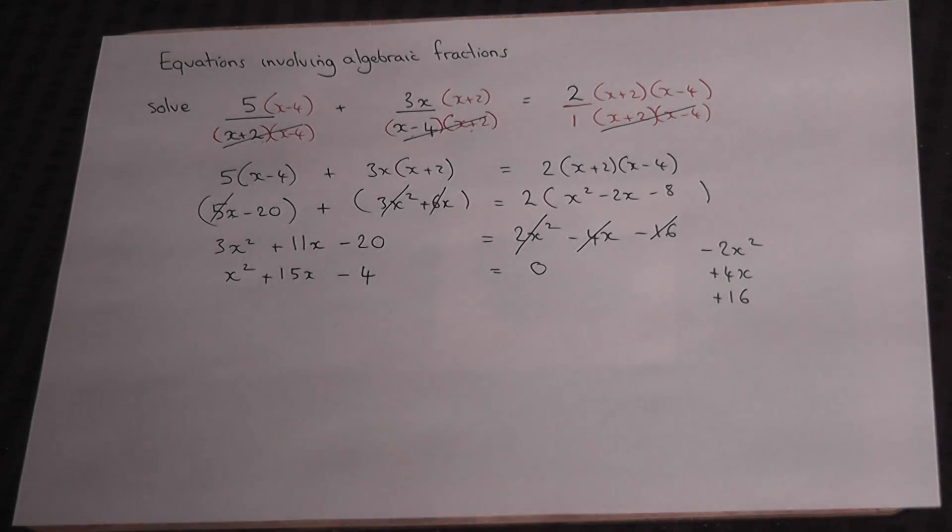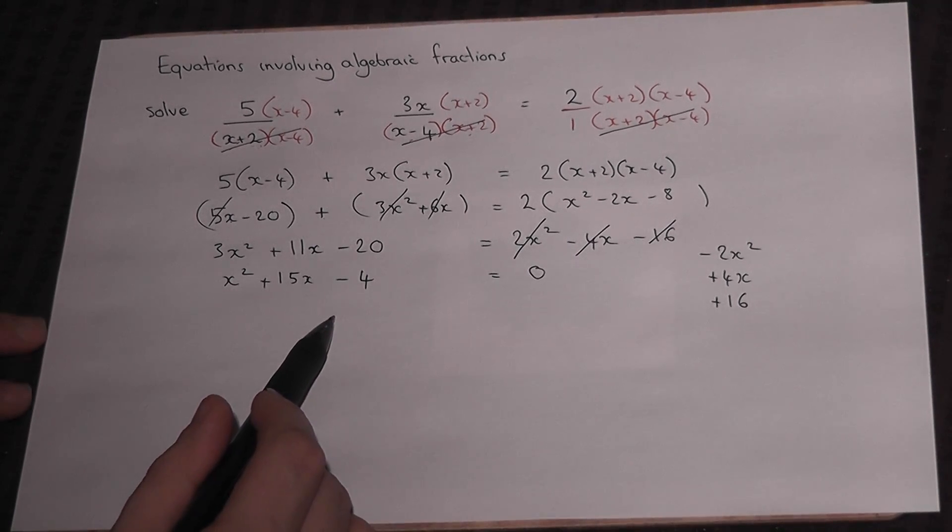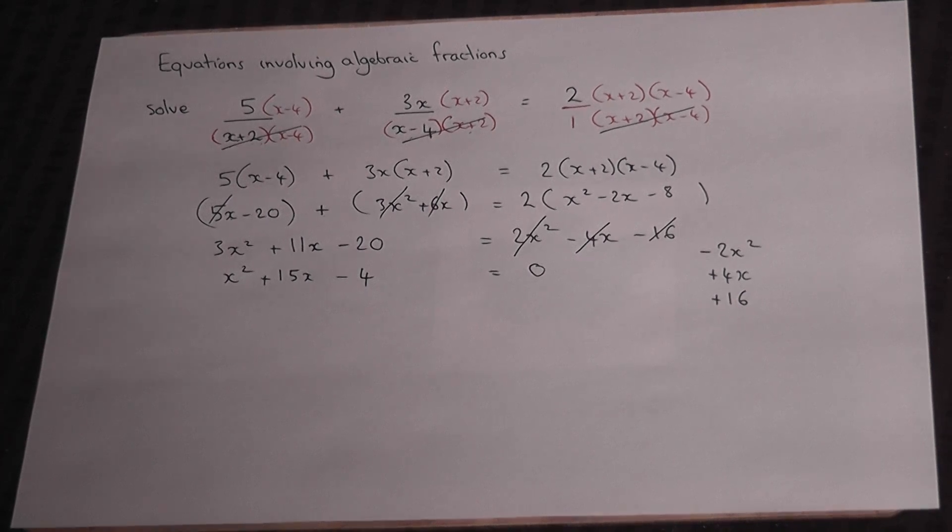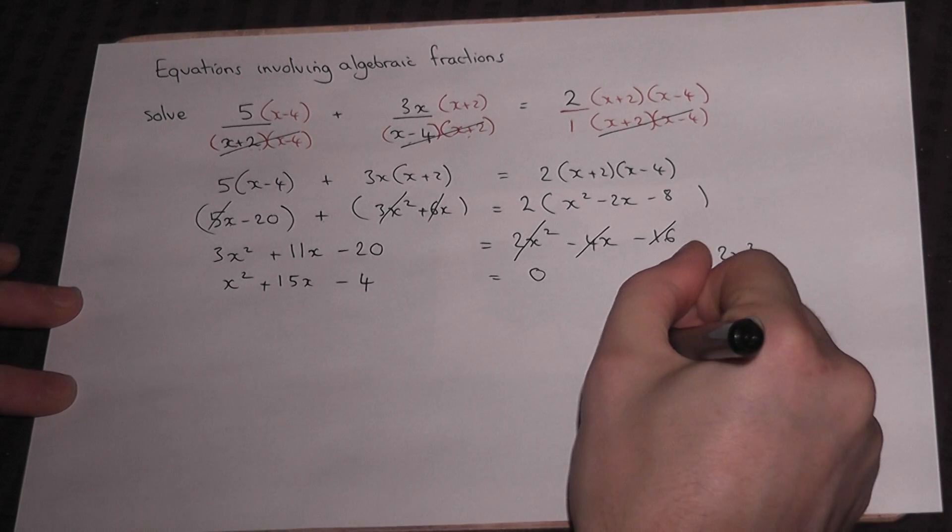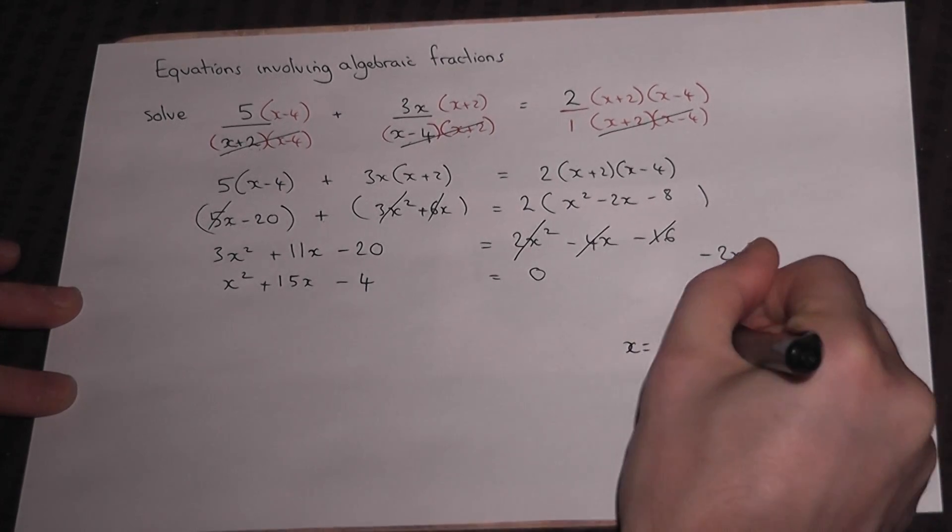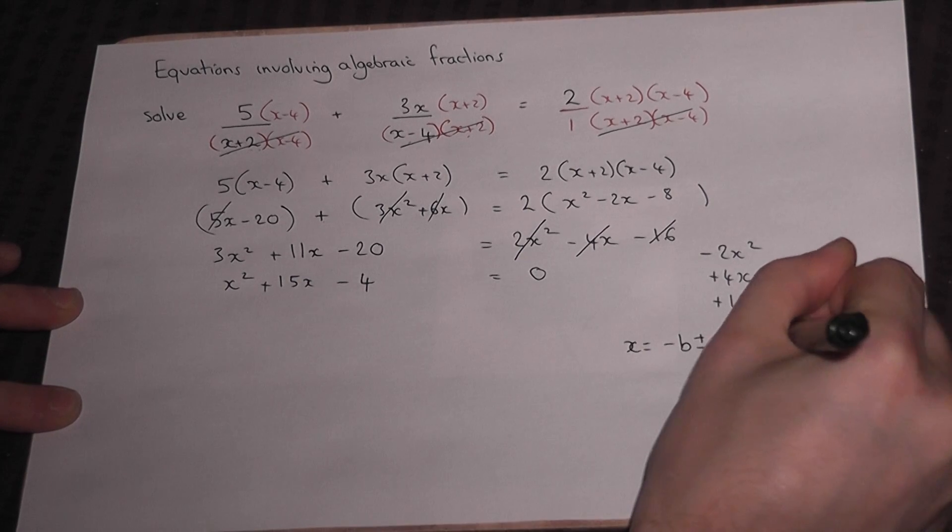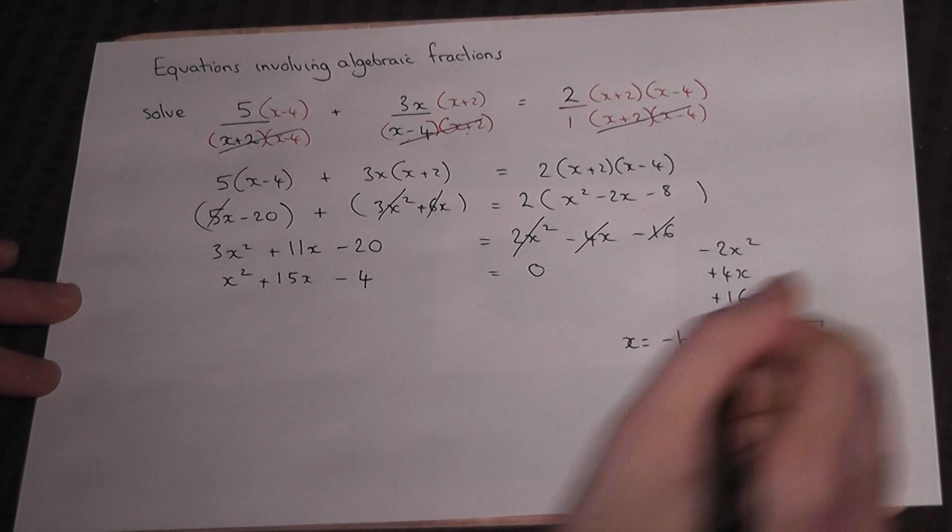To solve this there are various methods. Step 1, it might factorize, but this doesn't factorize. So the only option really is to use the quadratic formula, which tells us the solutions: x equals minus b plus or minus the square root of b squared minus 4ac all over 2a.